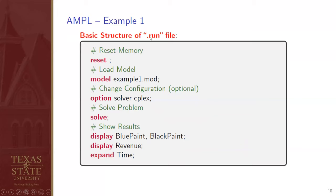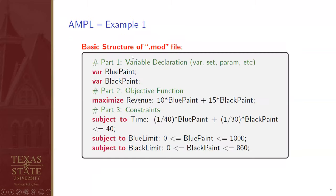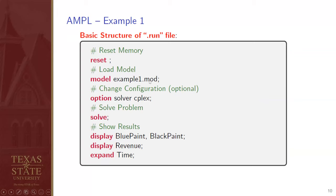The .run file is a separate file used to run the model. We start with reset to clear memory, then load the model — for example, example1.mod. Then we call the solver simplex using the option command. Then solve. To show results, we display the values for blue_paint and black_paint, and display the revenue. The command expand time shows the values for the constraint.